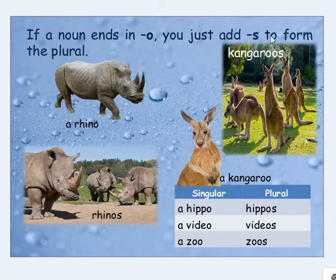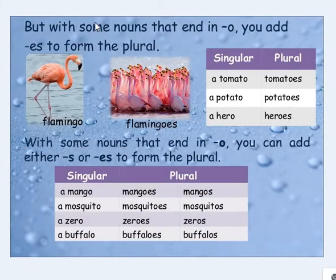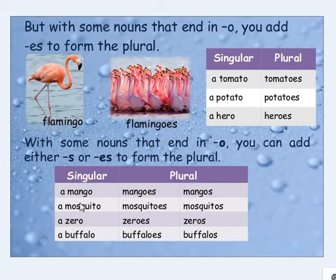If a noun ends in -o, you usually just add -s to form the plural. For example: rhino/rhinos, kangaroo/kangaroos, hippo/hippos, video/videos, zoo/zoos. But with some nouns that end in -o, you add -es. For example: flamingo/flamingos, tomato/tomatoes, potato/potatoes, hero/heroes, mango/mangoes, mosquito/mosquitoes.